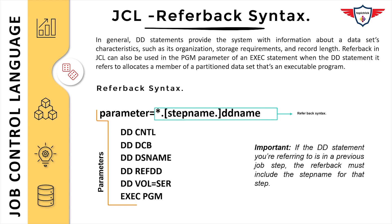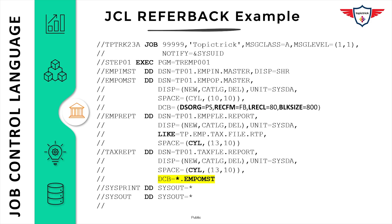Here is a sample JCL which executes a program called TR-EMP01. It uses an input master file and creates three output files: OUTEMAST, EMPREPORT, and TEXTRPT. The first file, OUTEMAST, is a sequential file with a record format of fixed block, a logical record length of 80, and a block size of 800. The next file, employee report, is created using the LIKE parameter to copy properties from an existing file: TP.EMP.TEXT.FILE.REPORT.